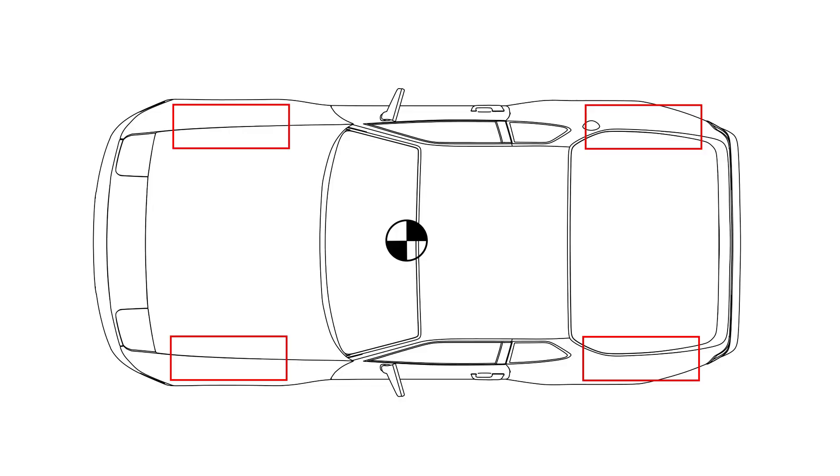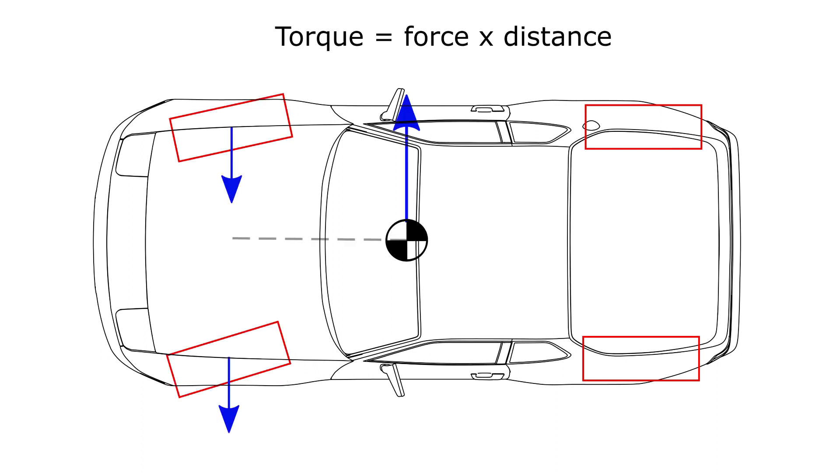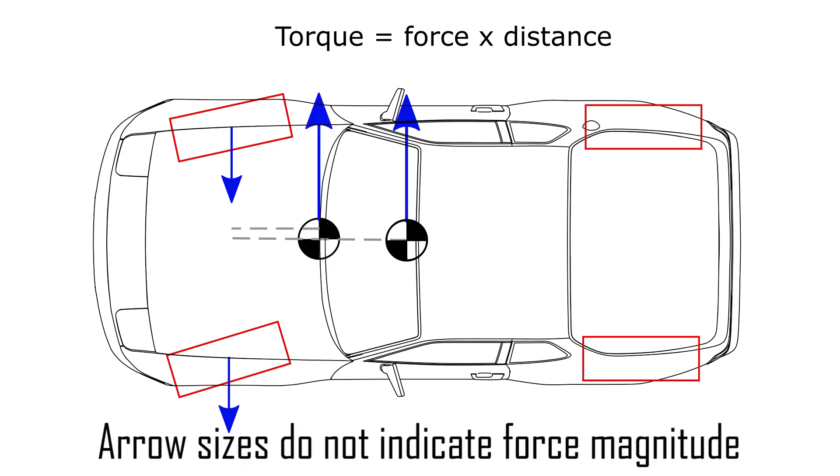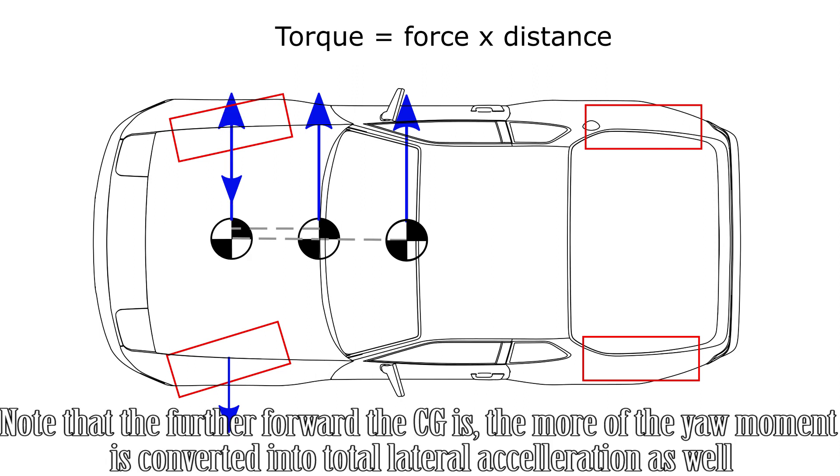The other reason that a nose-heavy car can cause turn-in understeer is that it reduces the distance between the center of gravity and the force from the front wheels. And while moving the center of gravity forwards does increase the magnitude of the grip force on the front wheels, it does so at a lesser rate than the decrease of the distance.